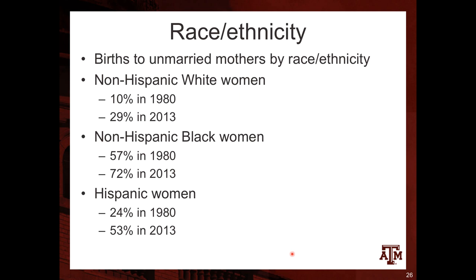In terms of race and ethnicity and births to unmarried mothers: for non-Hispanic white women, 10% of births were to unmarried mothers in 1980; for non-Hispanic African American women this was 57%; and for Hispanic women it was 24%. By 2013 these percentages increased to 25% for white women, 72% for African American women, and 53% for Hispanic women. Non-Hispanic white women still have the lowest percentage, Hispanic women are in the middle, and African American women have the highest.